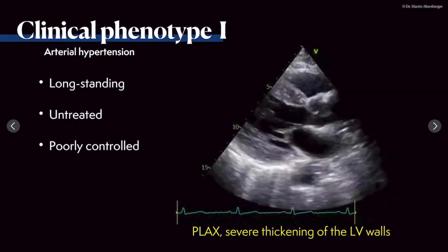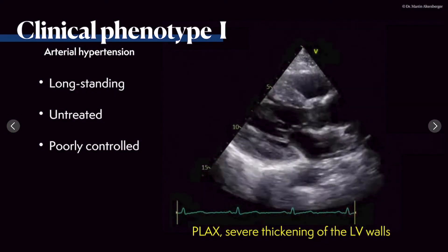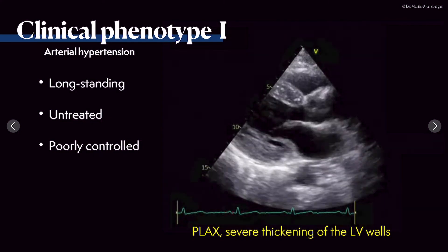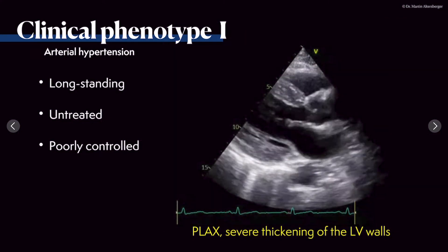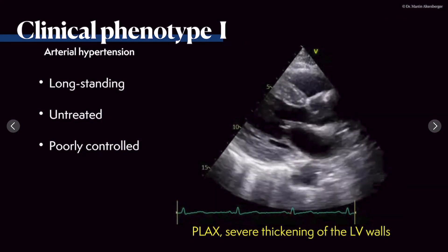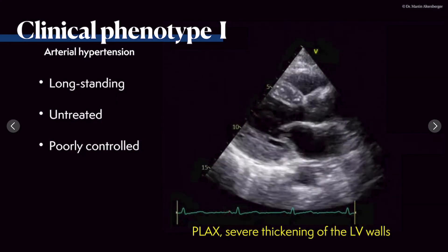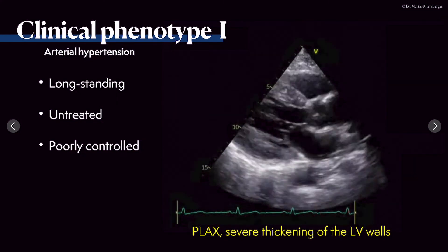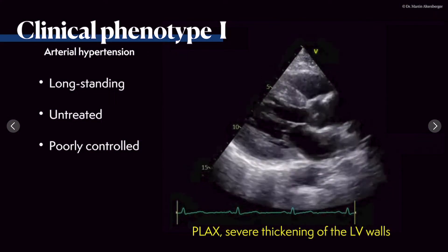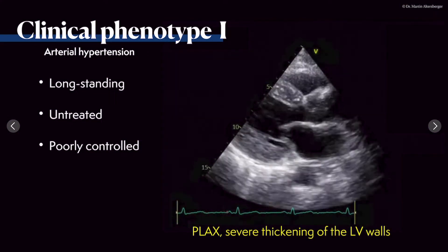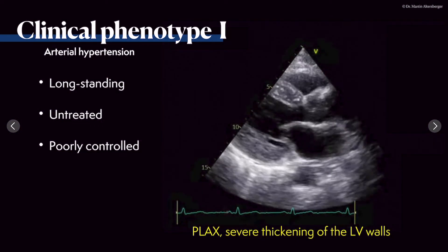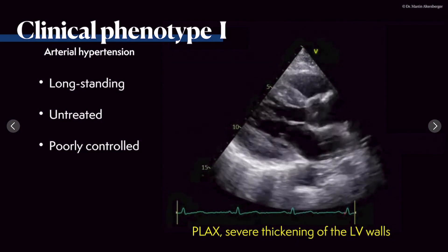The clinical phenotype I want to discuss first is arterial hypertension - hypertensive heart disease. Very often in this case, for example in a parasternal long axis view, the walls are truly thick - approximately 14 to 15 millimeters - so truly thick walls of the interventricular septum and the inferolateral wall.